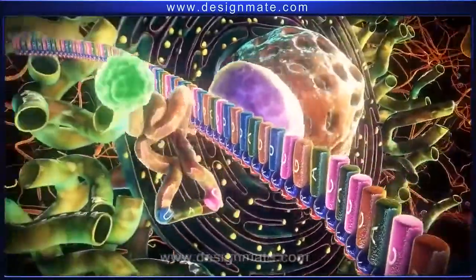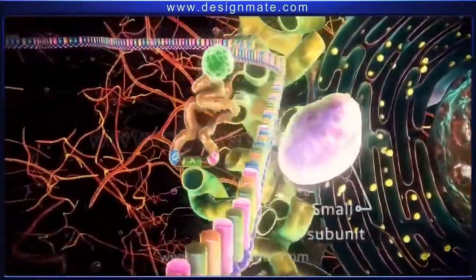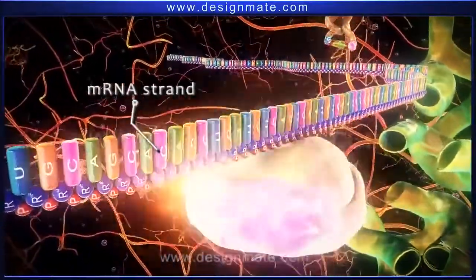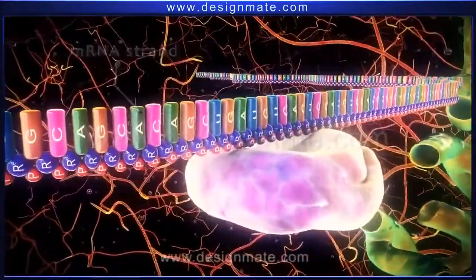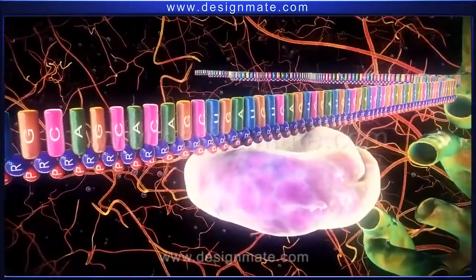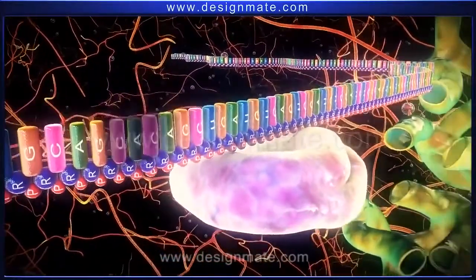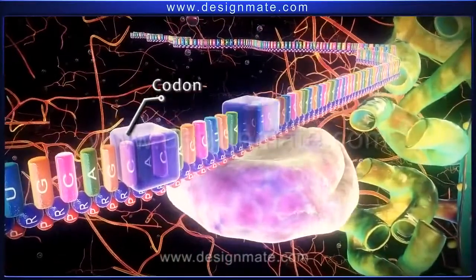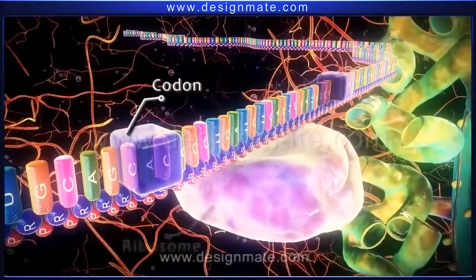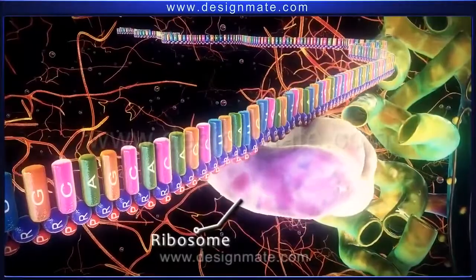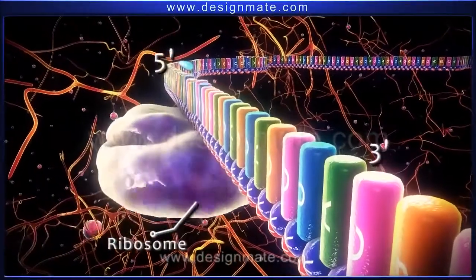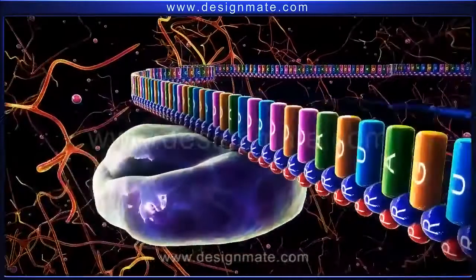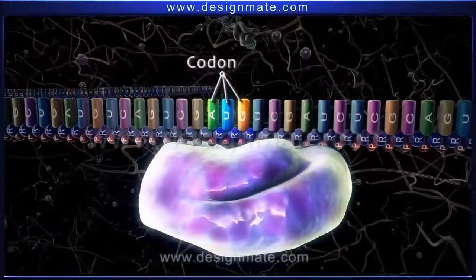During the initiation stage, a small subunit of the ribosome binds to the mRNA strand. The mRNA strand is made up of codons, which are sequences of three bases. Then the ribosome subunit moves along the mRNA in the 5' to 3' direction, until it recognizes the AUG codon, or the initiation codon.